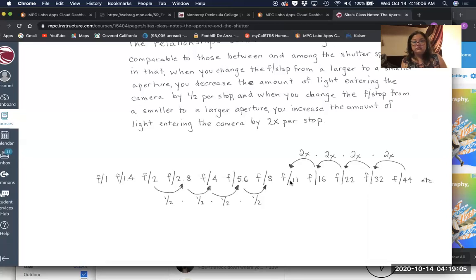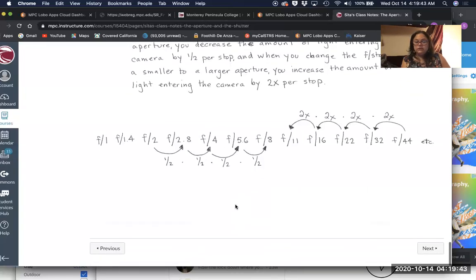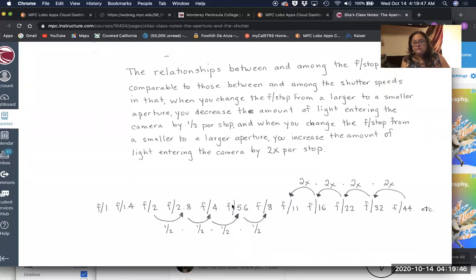And so if I change my aperture from f44 to f11, I have opened up by four stops and I have increased the amount of light entering the camera by 16 times. So 2 times 2 is 4, times 2 is 8, times 2 is 16. And if I were to continue, then going to f8 would increase the amount of light by 32 times, and then 64 times, and 128 times, and 256 times, 512 times, and 1024. And if we got to f1, 2048.